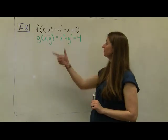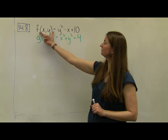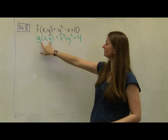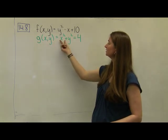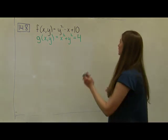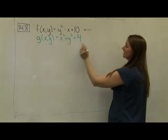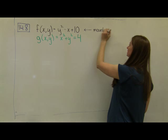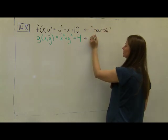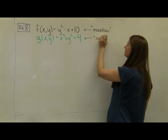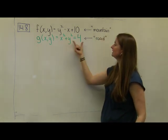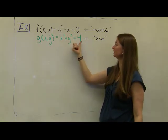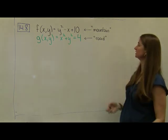Let's take a look at an example. Let's say that I have a function f(x, y) given by y squared minus x plus 10. And let's say that I have a constraint function given by g(x, y) equals x squared plus y squared equals 4. Based on the analogy of our previous example, this function is like our mountain function — the function that we want to maximize and minimize. And this function is our constraint function, which was like our road. I can tell it's our constraint function because it's set exactly equal to a constant, so it's just some level curve in the x-y plane.